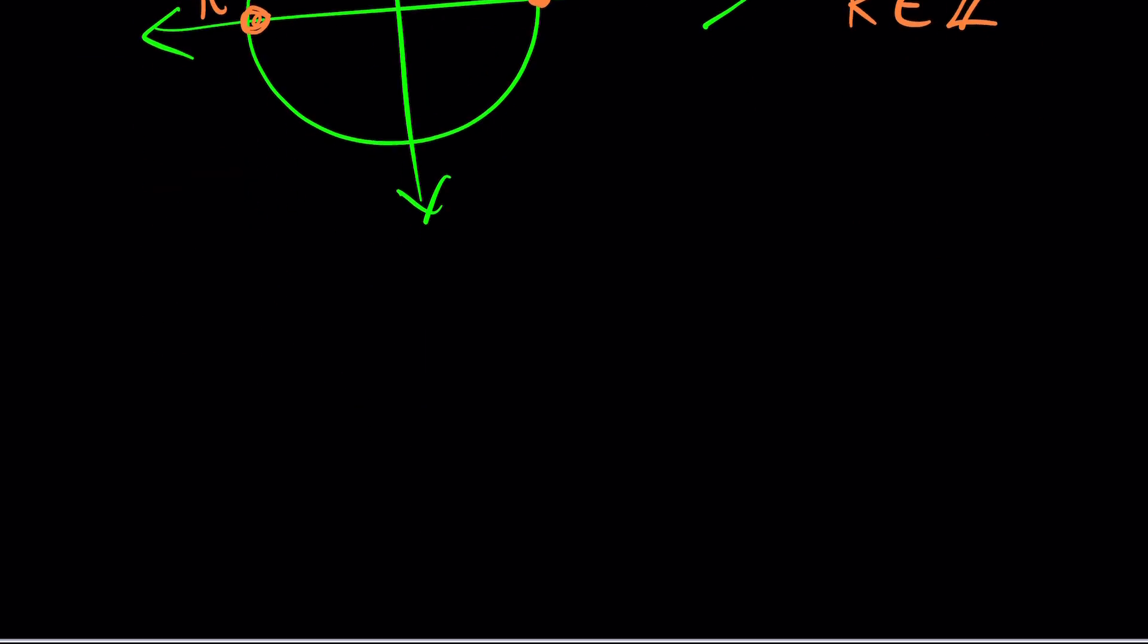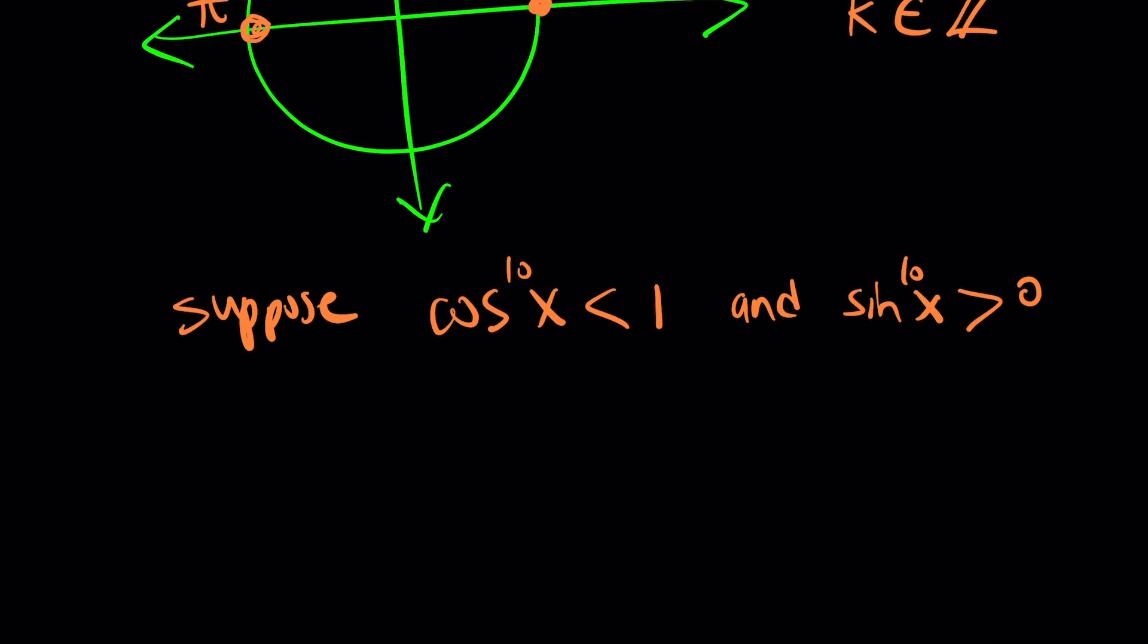So suppose cosine to the 10th power of x is less than 1, and sine x to the 10th power is greater than 0, which means they're not going to take the value of 1 and 0. Well, instead, obviously, you want cosine x to the 10th power. It cannot be greater than 1. The highest value you can get is 1.